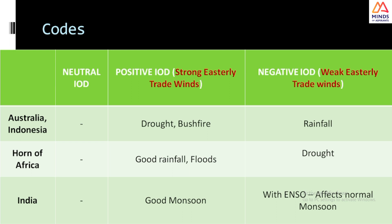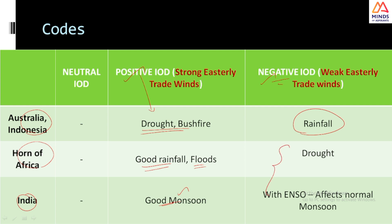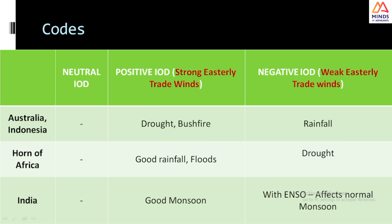In summary: during positive IOD, Australia experiences drought and bushfires, the Horn of Africa and African region receive good rainfall with resulting floods, and India experiences an amplified monsoon with very good rainfall. During negative IOD, the Australian region sees good rainfall, while Africa and India experience low amounts of rainfall. With respect to ENSO, it will also affect the Indian monsoon in a very significant manner. I hope you have understood the concept of Indian Ocean Dipole — do let me know in the comments if you need any further concept clarity, and thank you for watching.